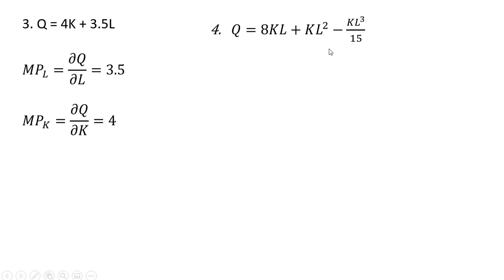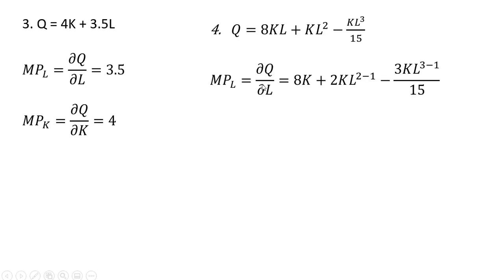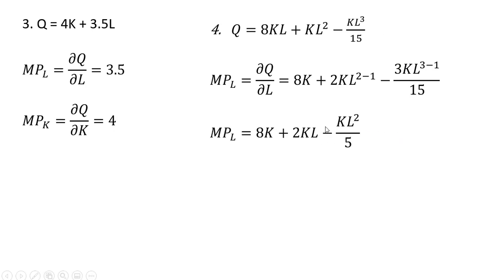Another production function. For the marginal product of labor, the term 8KL becomes just 8K when we take the partial derivative with respect to L. For the KL squared term, we bring the 2 down in front and subtract 1 from the exponent on L. And for the last term, we bring the 3 down in front off the exponent of the L term and subtract 1 from that exponent. Simplifying, 3 divided by 15 leaves us 5 in the denominator.